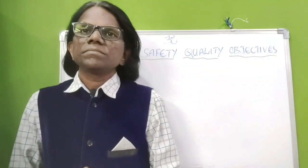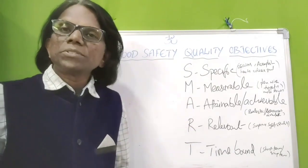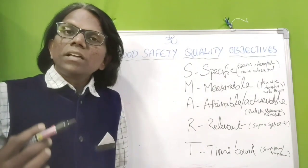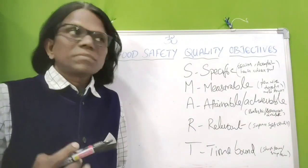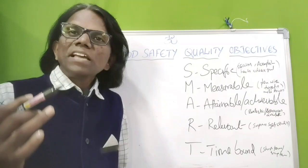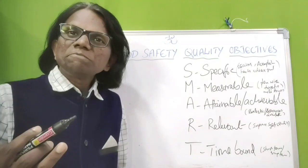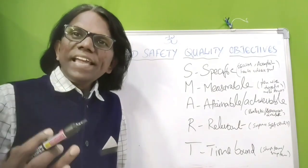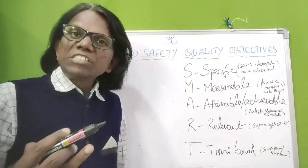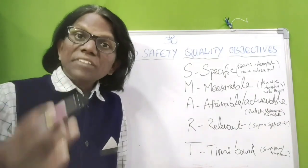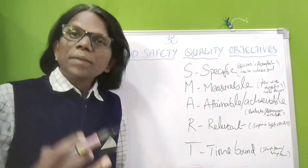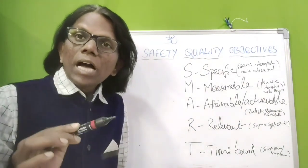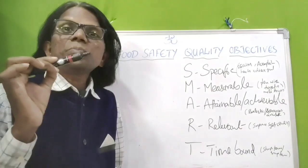The quality objectives should be SMART — an acronym where S means Specific, M means Measurable, A means Attainable or Achievable, R means Relevant, and T means Time Bound. Let us have a look at each of these.